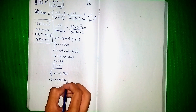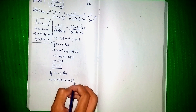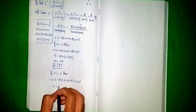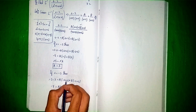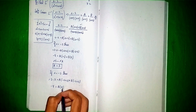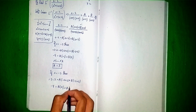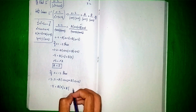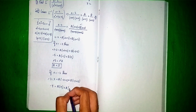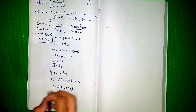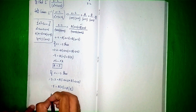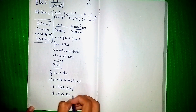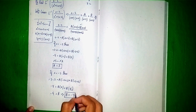So minus 4 equals A(minus 2 plus 2), which is A times 0, so the A term is eliminated. Then plus B(minus 2 plus 3), which is B times 1. So minus 4 equals B times 1, therefore B equals minus 4.